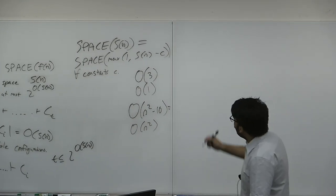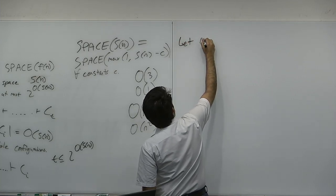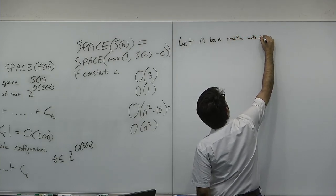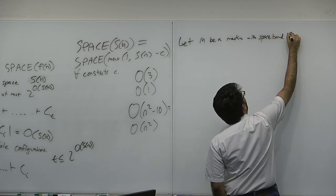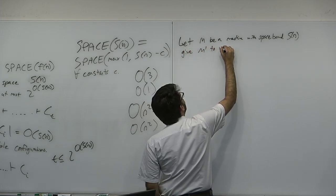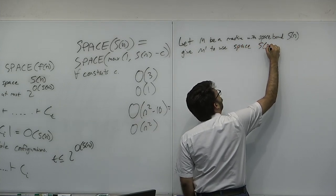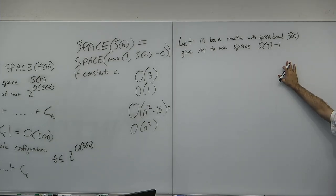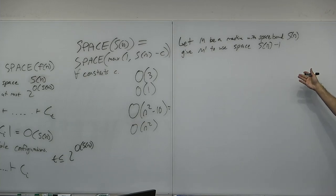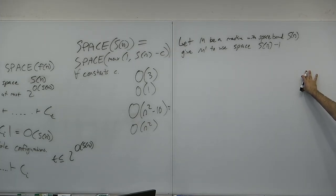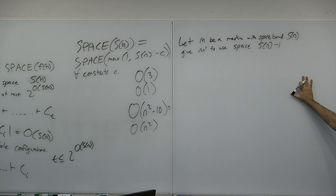Let M be a machine with space bound S(n). We want to give M′ which uses space S(n) − 1. If we can create an equivalent machine which uses just one less unit of space, we can inductively apply that to get any constant c reduction. So this is sufficient to prove the theorem.